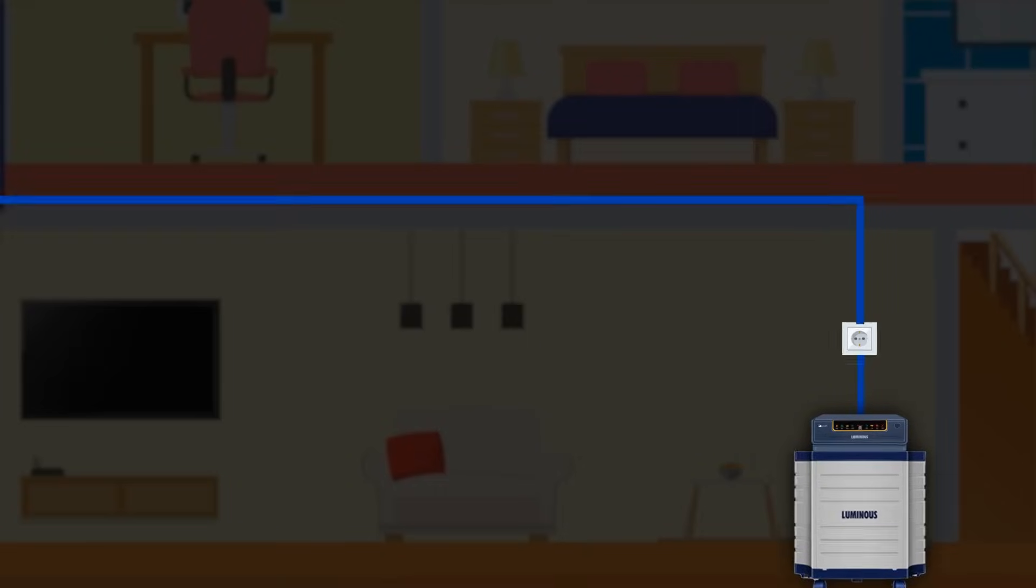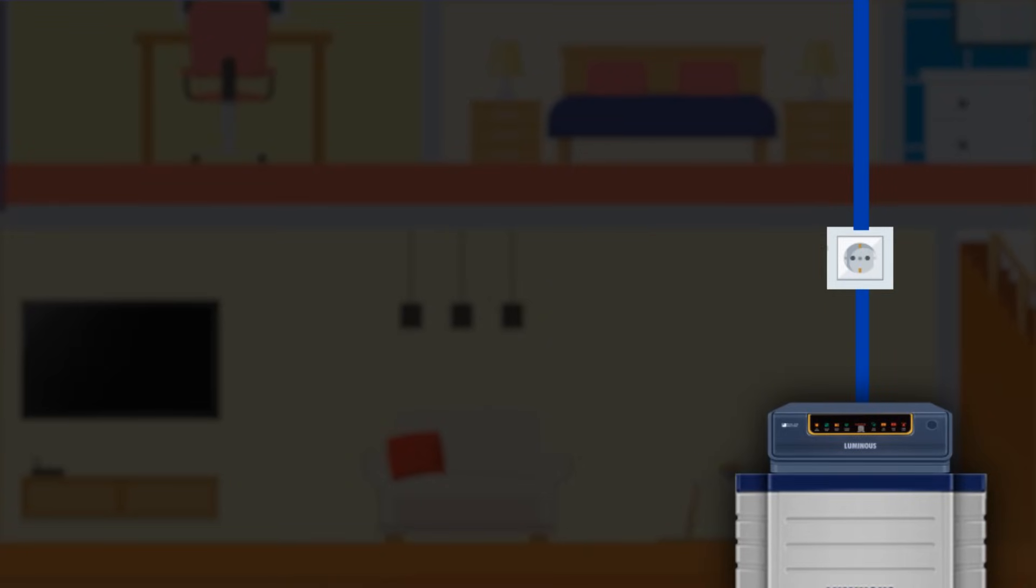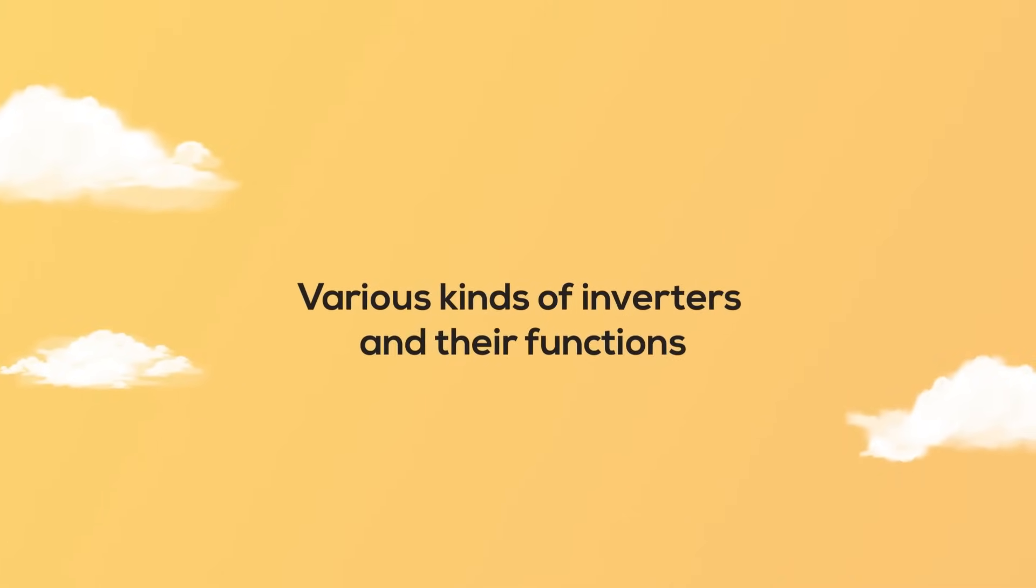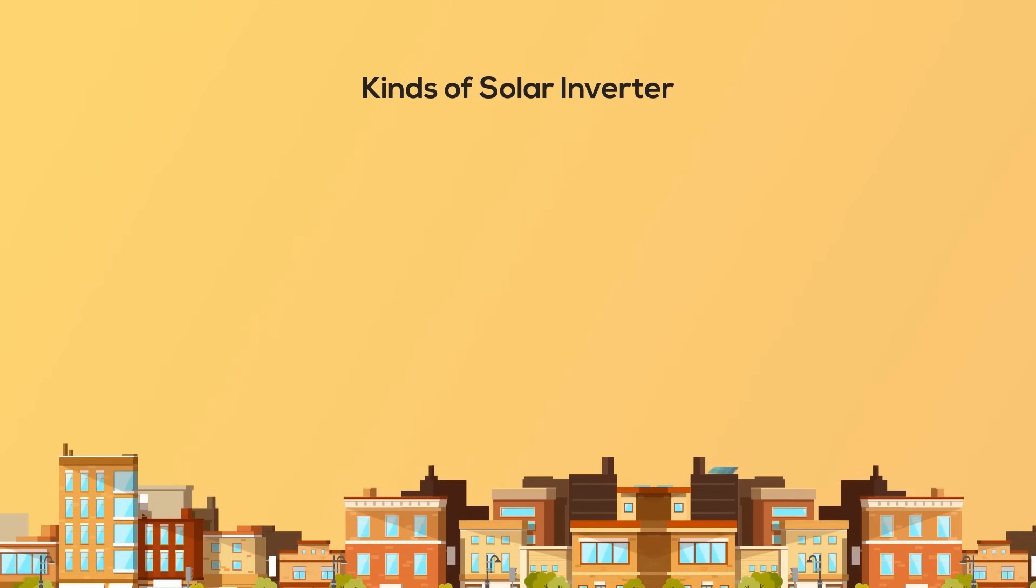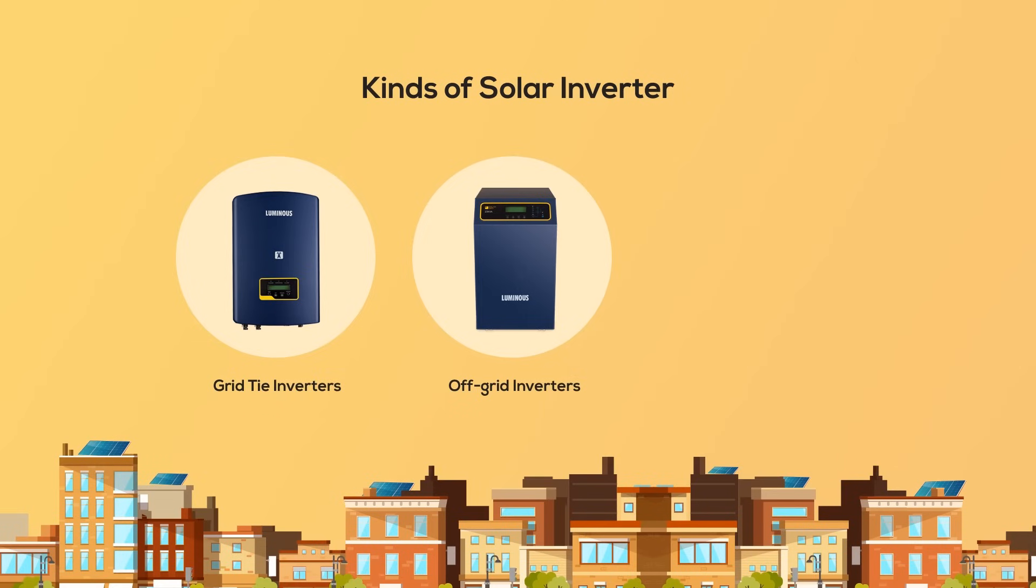Now that we know how solar inverters work, let's look at the various kinds and their functions. There are three core types of solar inverters: grid-tie inverters, off-grid inverters, and hybrid inverters.